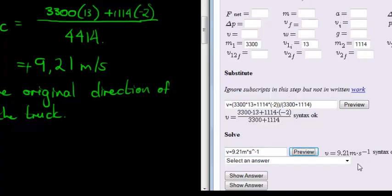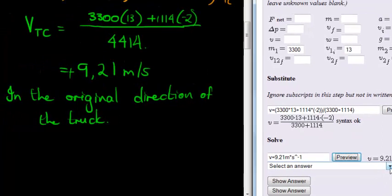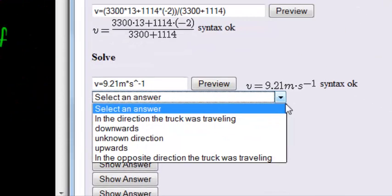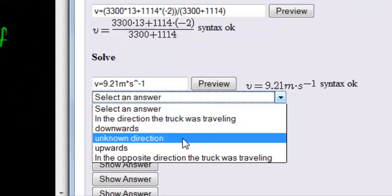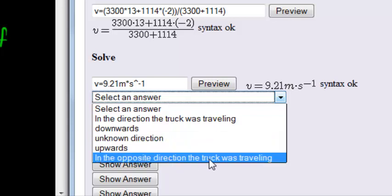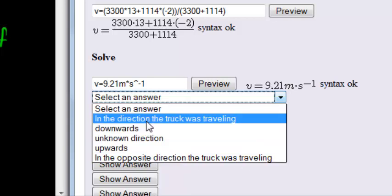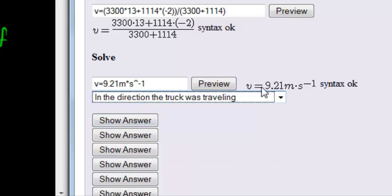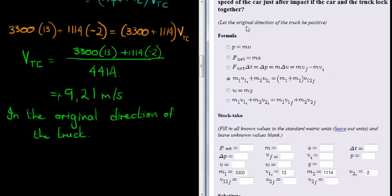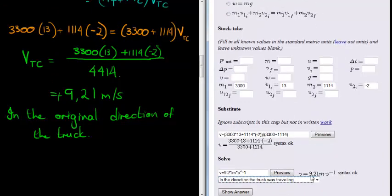There we go. 9.21 meters per second, and again, very important, direction. In the original direction of the truck, let's see what options we are given. In the direction the truck was traveling, downwards, unknown direction, upwards, in the opposite direction the truck was traveling. So we see it's positive, and they told us that the original direction of the truck must be taken as positive. So positive answer would be in the direction the truck was traveling, the original direction. Cool. I'm happy with that. I hope you are getting this with enough examples. Cool. See you in the next one.